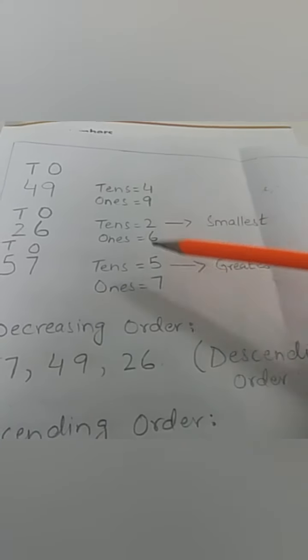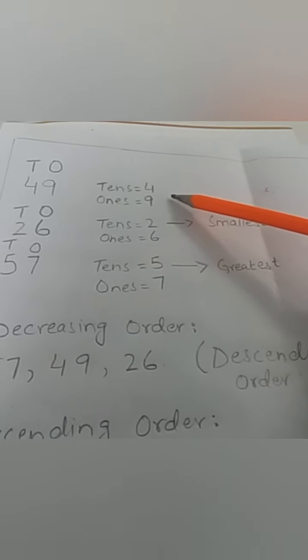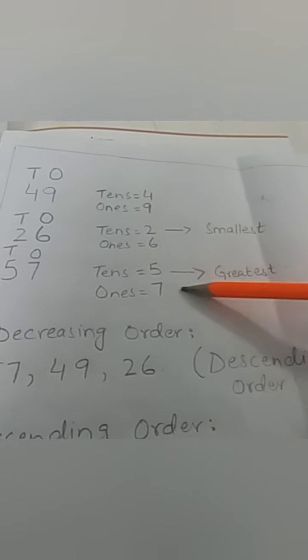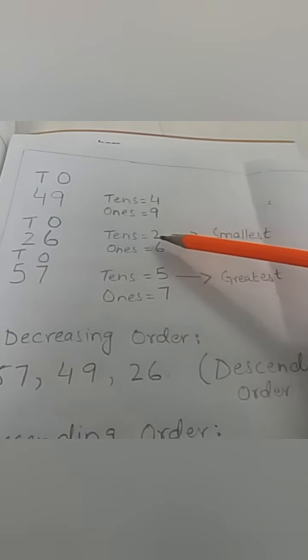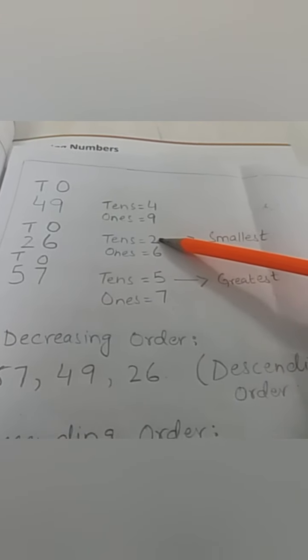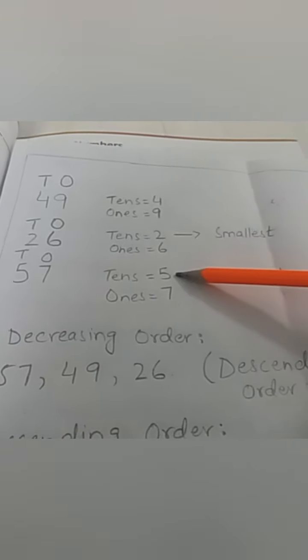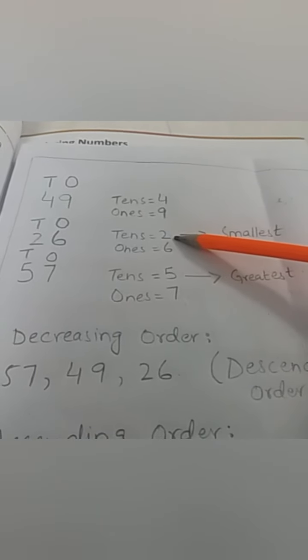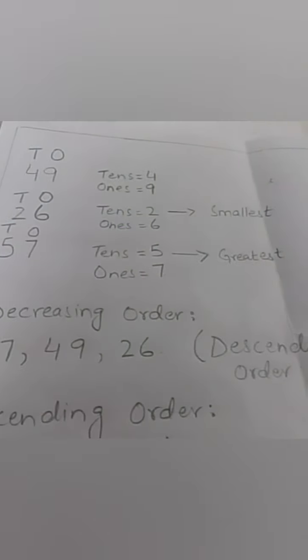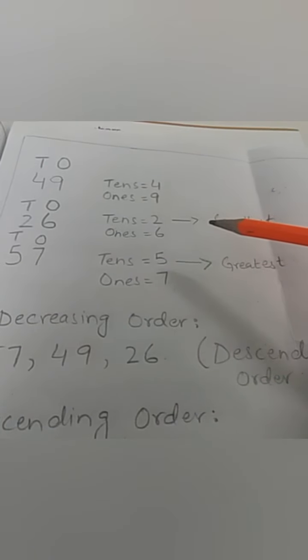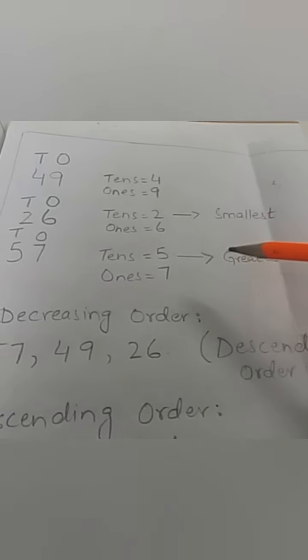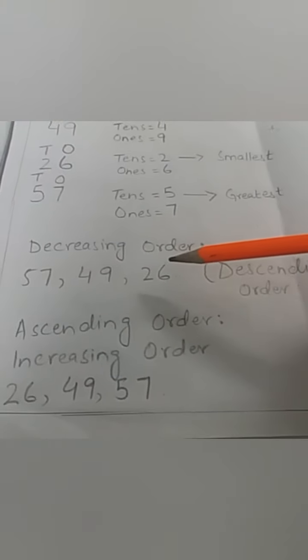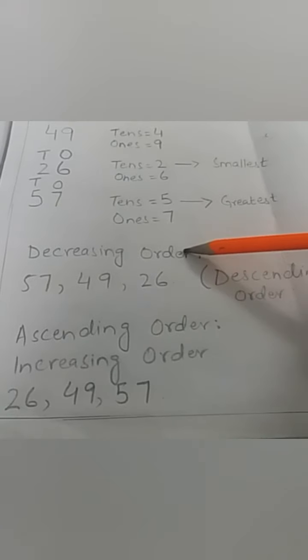Now we can see in these three numbers, 57 has the greatest number of tens, which is greater than two and four, right? So 57 is the greatest number. Then two is the smallest of tens from four and five, so this is the smallest number. Number 26 is smallest.